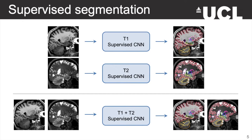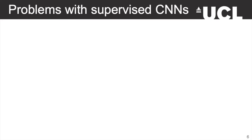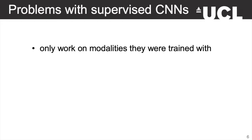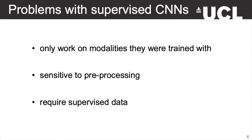However, all these supervised methods present the same problems. The first is that they are extremely sensitive to intensity distributions, so they only work on modalities they were trained with. For instance, the previous examples couldn't be applied to segment proton density or FLAIR scans. Similarly, they are sensitive to different levels of pre-processing like bias field correction or skull stripping. Finally, they require supervised training data for all contrast and pre-processing types you want to segment, which quickly becomes problematic if you want your model to adapt to a wide range of data without retraining.